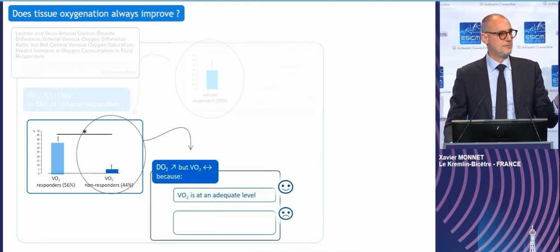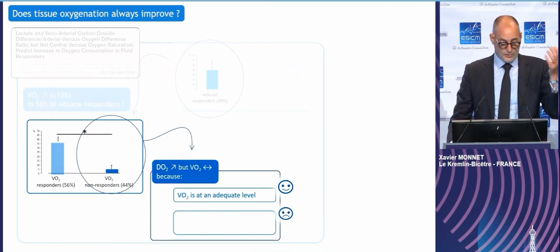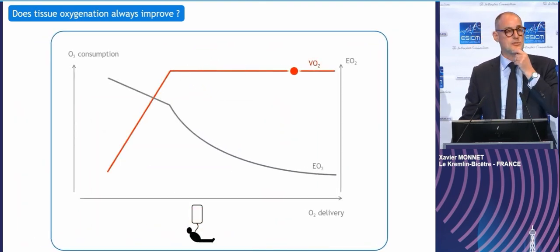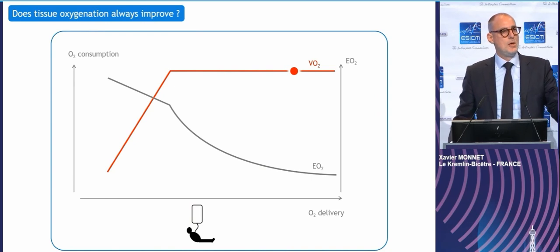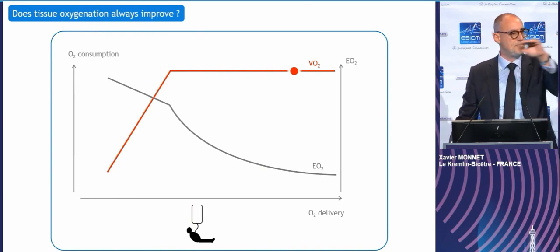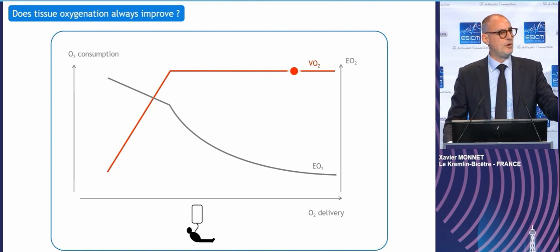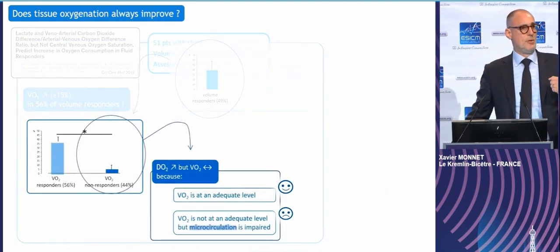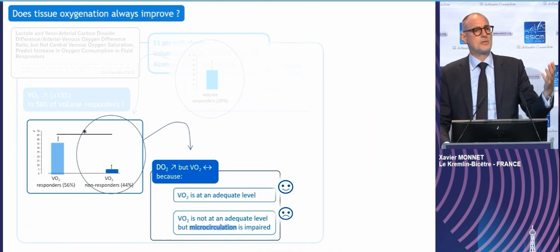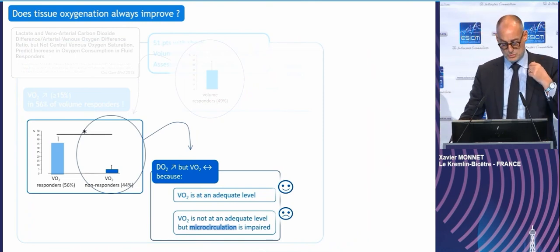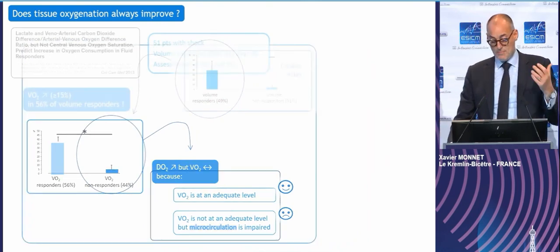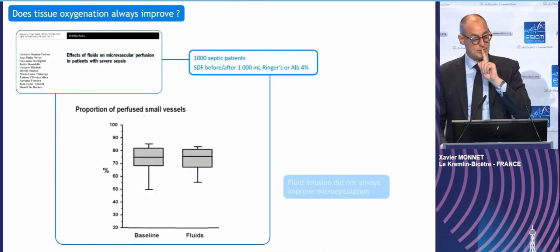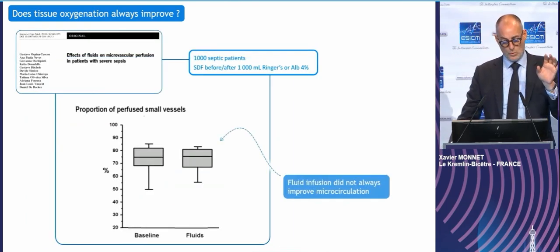There are likely two reasons for this. The first is the DO2-VO2 relationship — likely the patients were working on the flat, independent part of the relationship, so despite the increase in oxygen delivery, oxygen consumption did not change. It's also possible that fluid did not improve oxygen consumption because the microcirculation was impaired — mainly septic patients — and fluid does not always improve the microcirculation, as demonstrated in a study by Daniel de Becker.